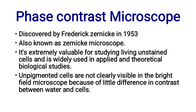Phase Contrast Microscope. It was discovered by Frederick Zernike in 1953 and is also known as the Zernike Microscope. It is extremely valuable for studying living and unstained cells and is widely used in applied and theoretical biological studies.